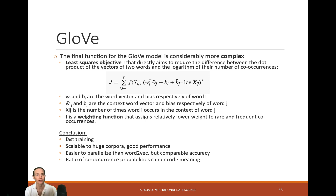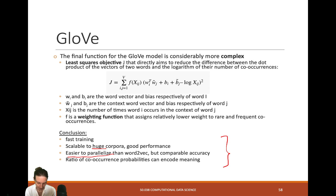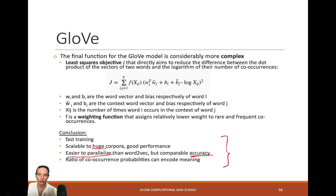The GloVe training function is more complex: it's a least-squares optimization that directly reduces the difference between the dot product of two word vectors and the logarithm of their number of co-occurrences. GloVe has fairly fast training, is scalable, has good performance, is even easier to parallelize than neural network approaches, and has comparable accuracy to Word2Vec. The ratio of co-occurrence probabilities can encode meaning effectively.